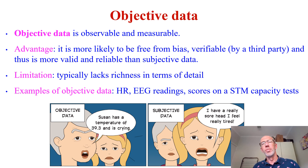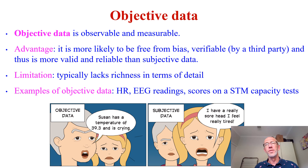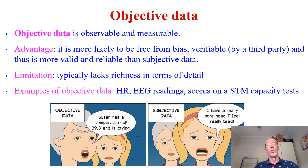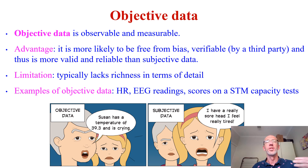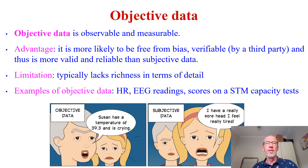Examples of objective data include physiological measures for stress. If we want to see how someone is responding to a stressful situation, an objective way would be measuring their heart rate — say, on a Garmin — rather than subjectively asking someone how stressed they are. The limitation is we don't get the richness of detail about what's triggering that stress response. That's where subjective data comes into play.